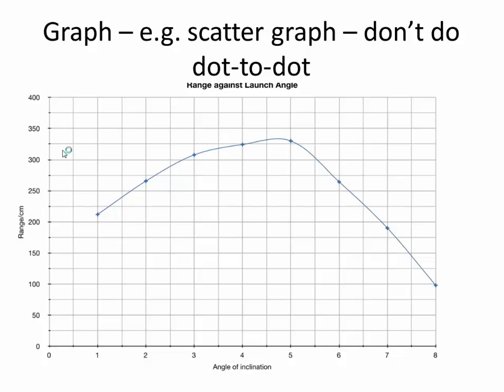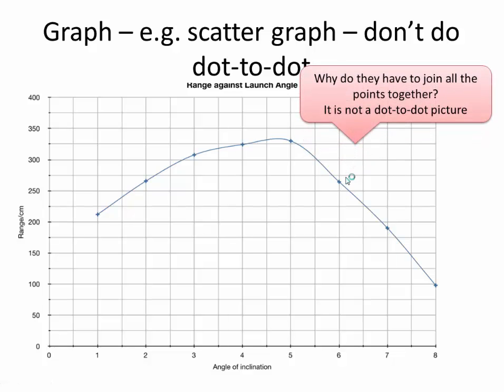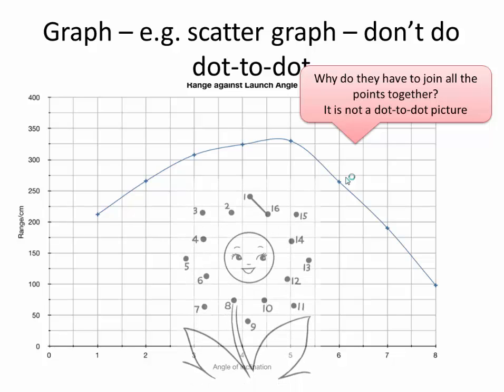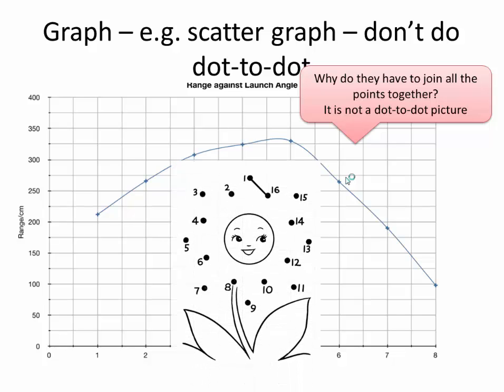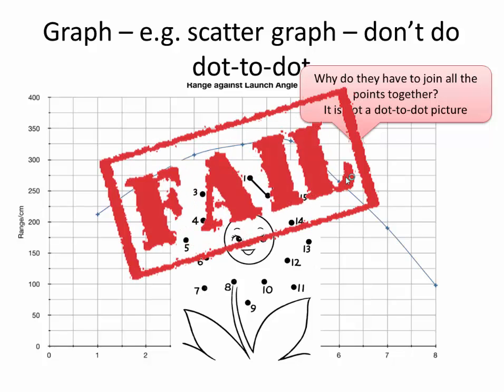When you draw a graph you should do a scatter graph most of the time — don't do dot-to-dots. Notice this person has joined up the dots as if they're making a flower. Why do they have to join all the points together? It's not a dot-to-dot picture. Fail.